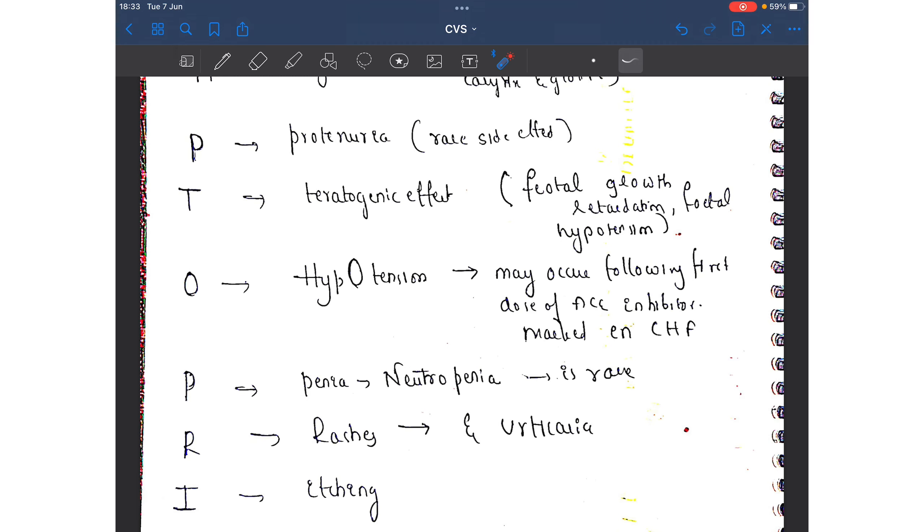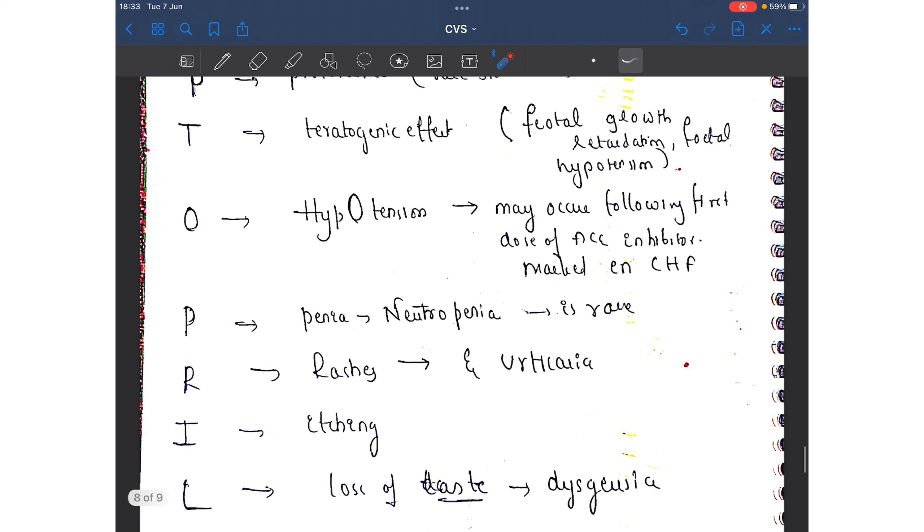CAPTOPRIL, O stands for hypotension. It may occur following the first dose of ACE inhibitor. If you are giving the patient this ACE inhibitor for the first time, it may lead to hypotension, and that too is more prominent in case of congestive heart failure.